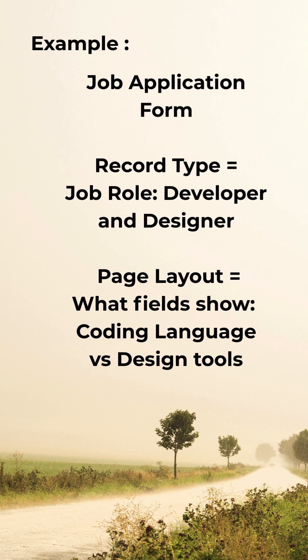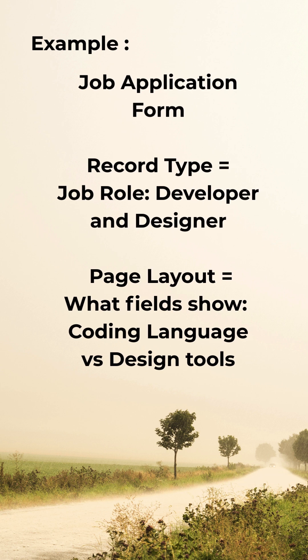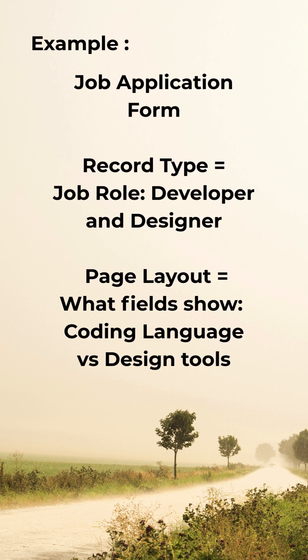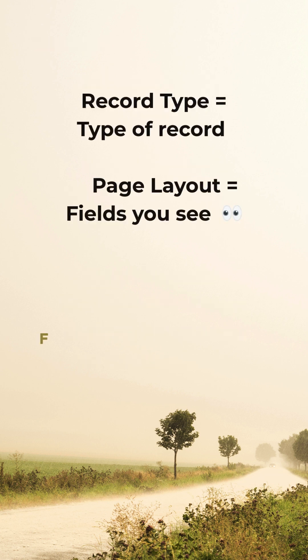Let's say you have a job application form and you have two types of jobs — one for the developer and one for the designer. You will create two different record types: a developer record type and a designer record type. You will also create different page layouts for them so you can arrange which fields show up. For the developer record type, the coding language field should be present in the page layout, and for the designer record type, the designer tool field should be present.